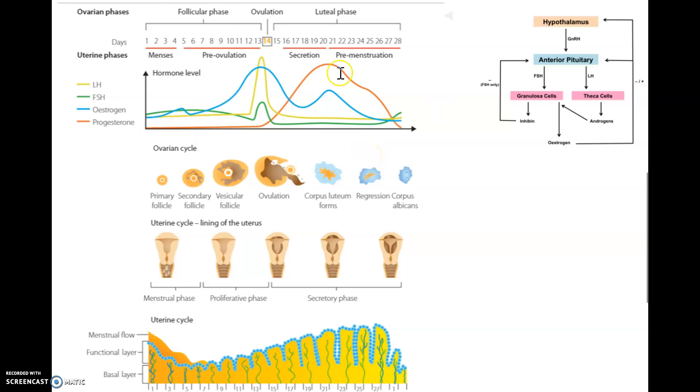In a normal reproductive cycle, we have no implantation, and we have no release of beta-HCG. Now, remember, beta-HCG is the hormone responsible for keeping the corpus luteum functional. If we have no implantation, we don't have this hormone, and the corpus luteum will degenerate into a scar tissue known as a corpus albicans.